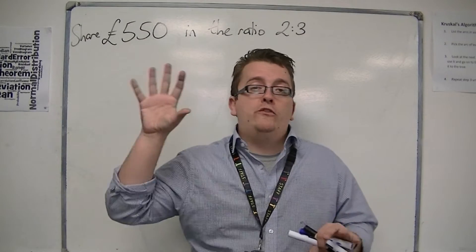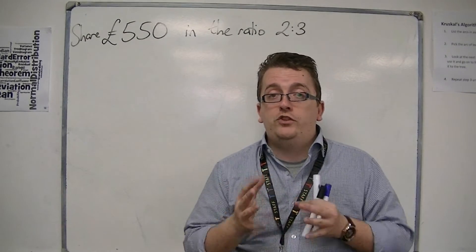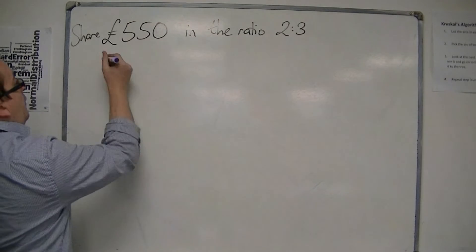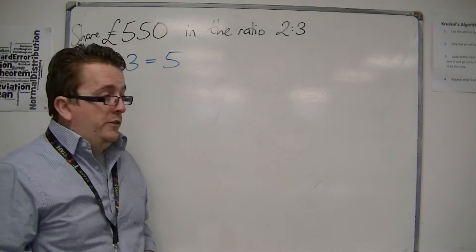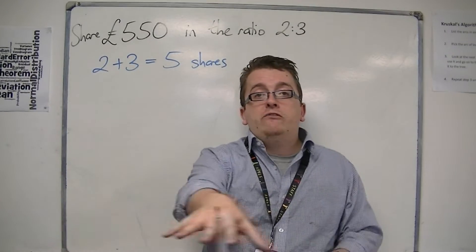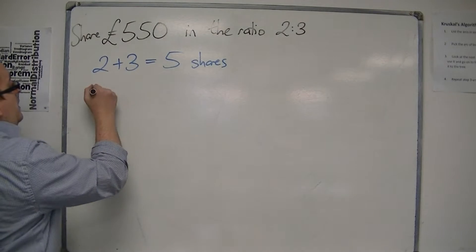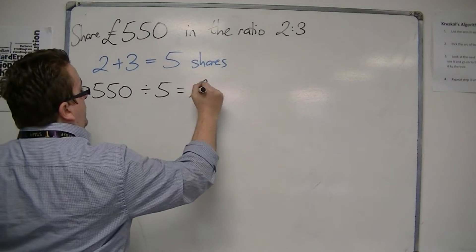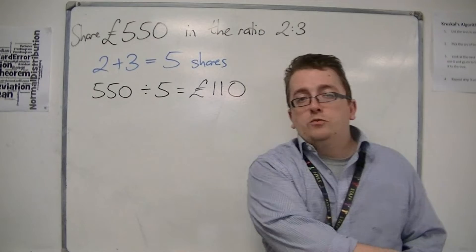Overall, we've got 2 shares for person A and 3 shares for person B, so in total we have 5 shares. We're splitting the money into 5 shares as our first step. With 5 shares, that means we're splitting the £550 into 5 piles of money — so we divide £550 by 5, giving £110 in each pile.